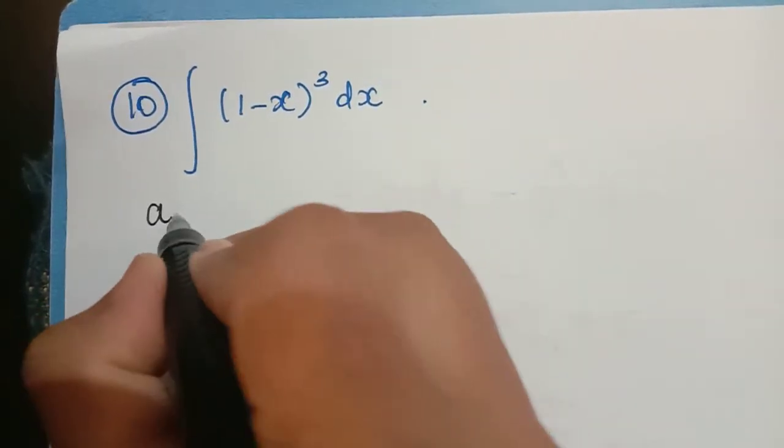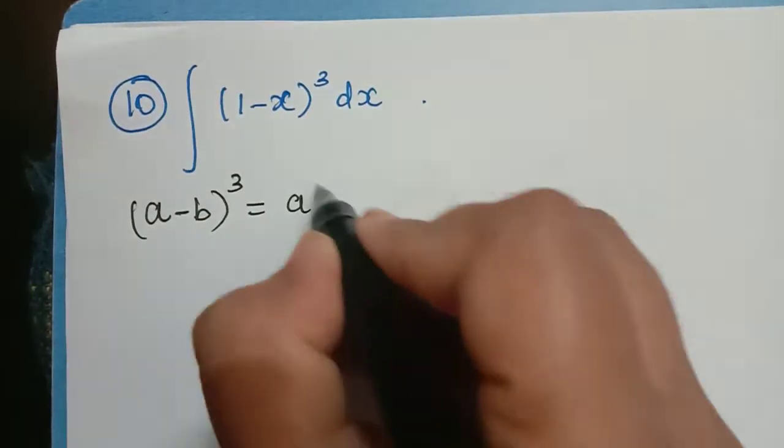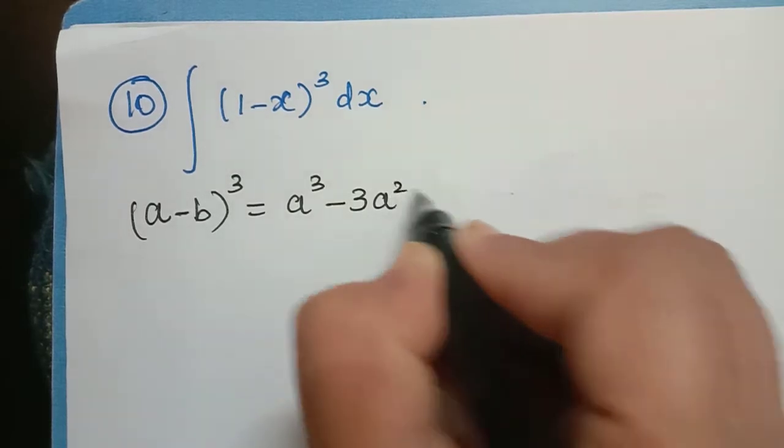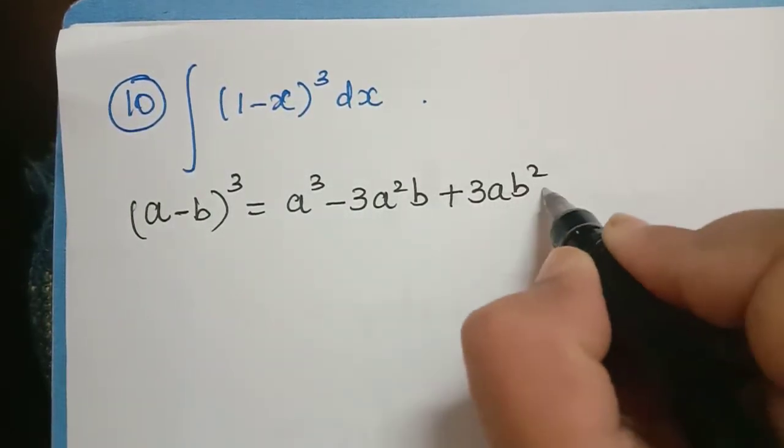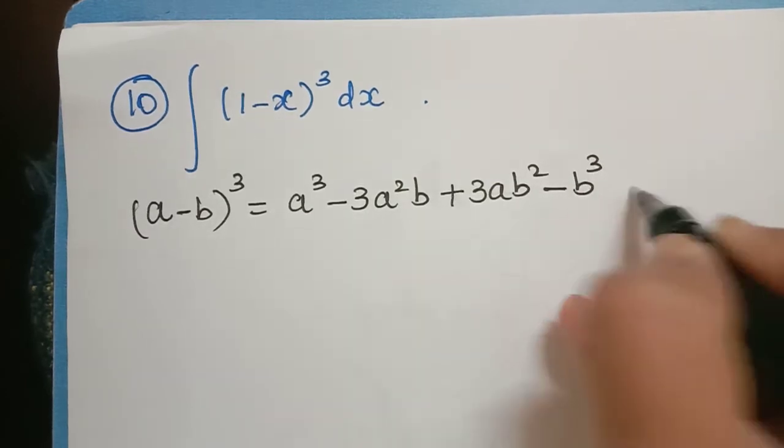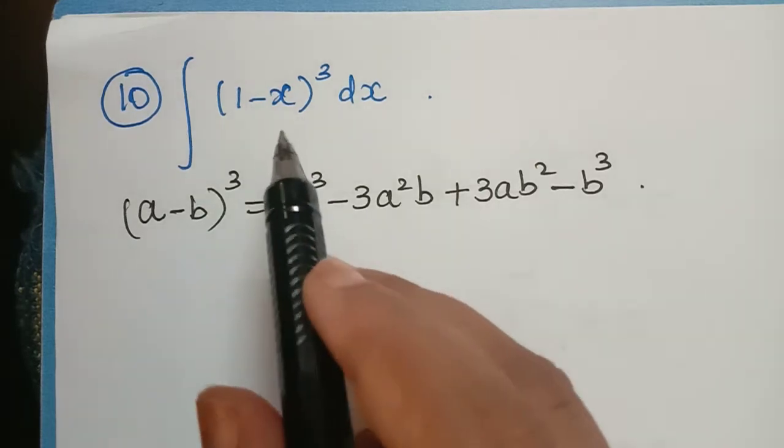using the formula (a-b)³ which is equal to a³ - 3a²b + 3ab² - b³. So this is the formula for (a-b)³. So we have to use it here.